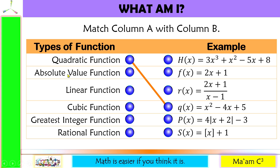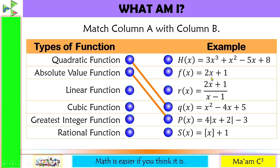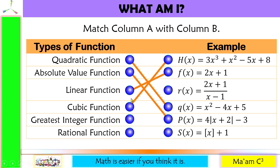For absolute value function, we just have to look for its symbol, and this one. For linear function, the highest value of the exponent is 1, it's here. For cubic, the highest value of the exponent is 3, so this one. For greatest integer function, let's just look for its symbol, this one. And for rational function, would be this one.